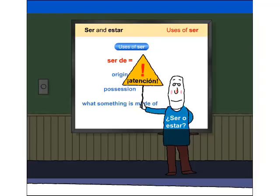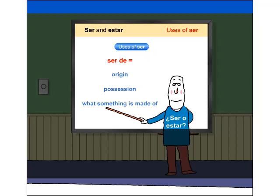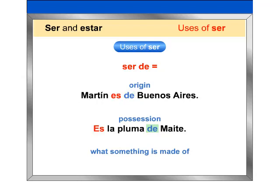Atención. Note that de is generally used after ser to express origin, possession, and the material something is made of. For example: Martín es de Buenos Aires. Es la pluma de Maite. La bicicleta es de metal.